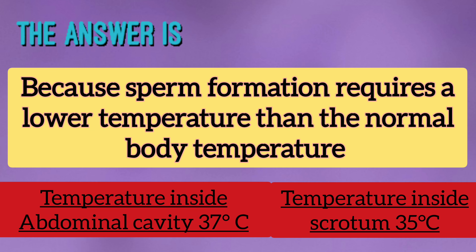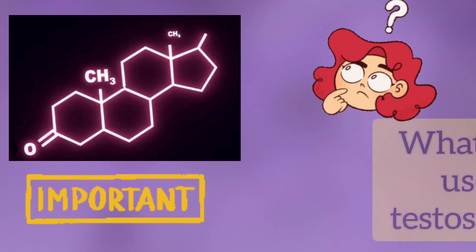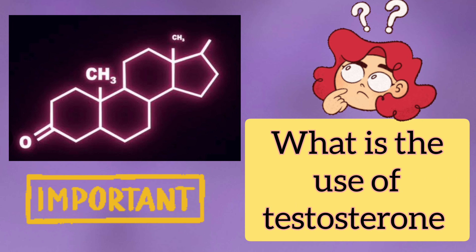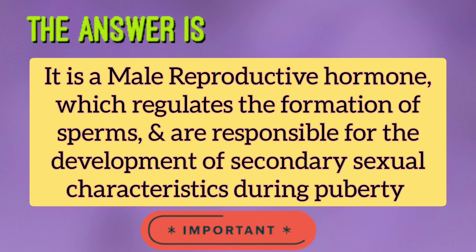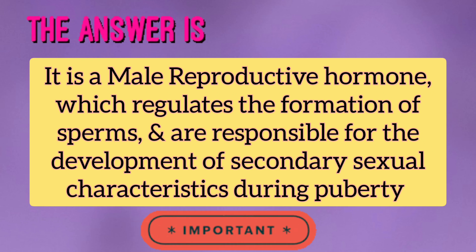Because sperm formation requires a lower temperature than the normal body temperature. Testes also produce a hormone called testosterone. Testosterone is a male reproductive hormone which regulates the formation of sperms and is also responsible for the development of secondary sexual characteristics during puberty.